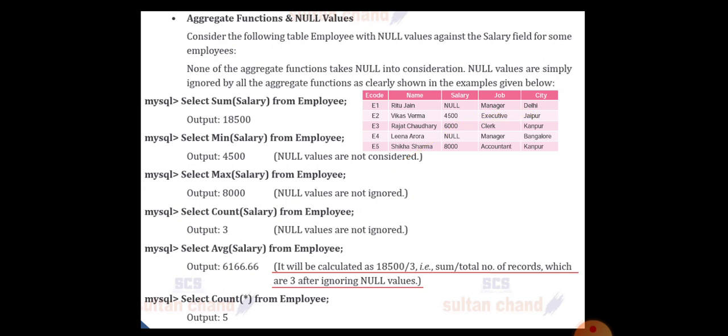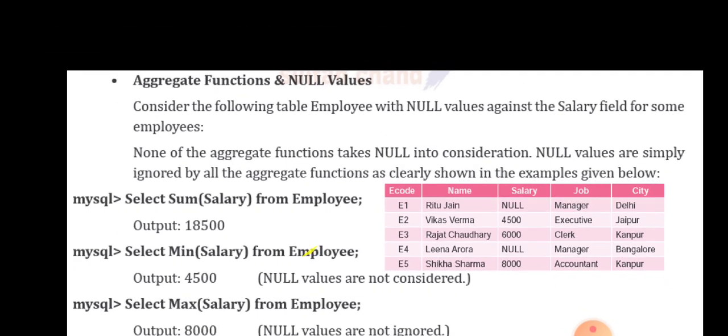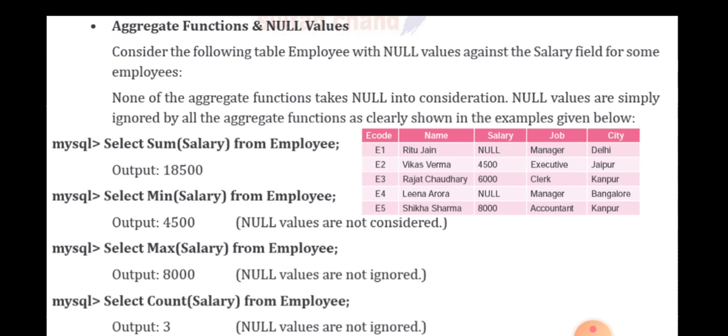My dear children, as I said earlier, how the sum of salary, min of salary, max of salary, count of salary and average, and COUNT(*) will execute, it is given in a slide. Consider the following table Employee with null values against the salary field for some employees. None of the aggregate functions takes null into consideration. Null values are simply ignored by all the aggregate functions as clearly shown in this example given below.